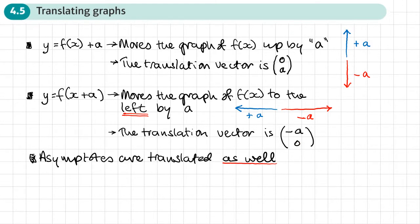The last thing with translations is that if we have any graph with asymptotes, like y equals 1 over x, then the asymptotes are translated as well. We use the same translation with the asymptotes because they're actually part of the graph, so translate those in the same way you translate the rest of the graph.